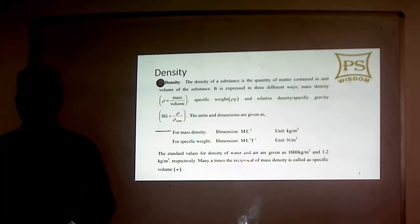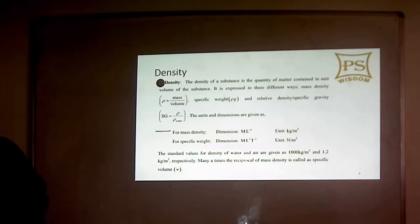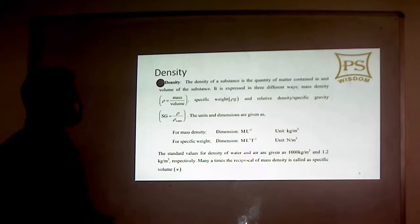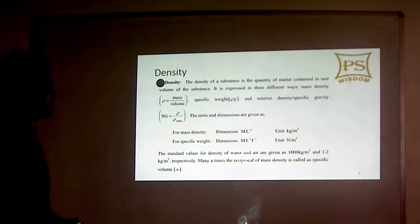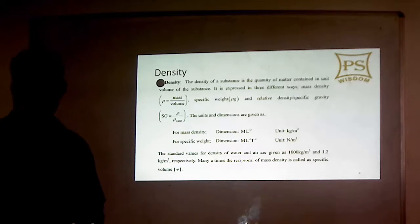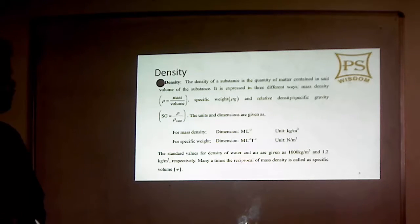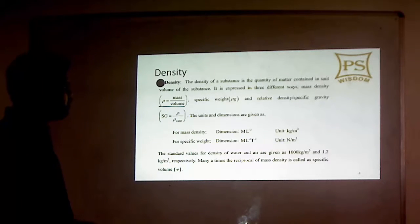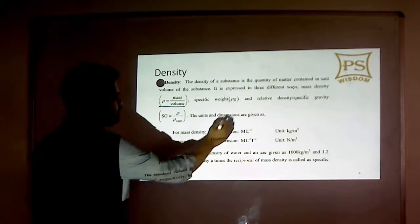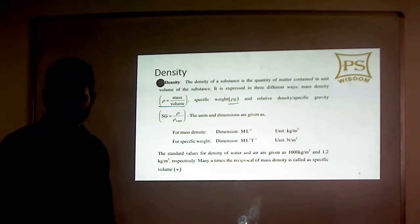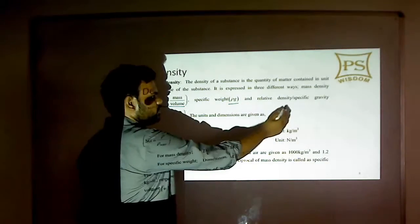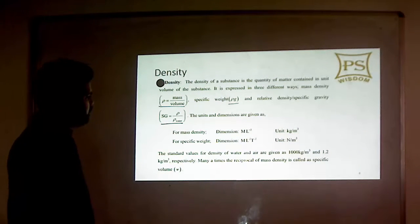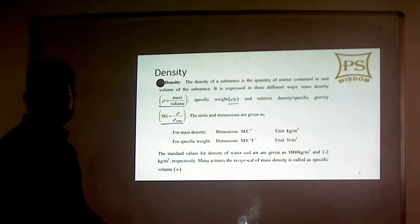The density of a substance is the quantity of matter contained in a unit volume of the substance. It is expressed in three different ways: mass density, which is mass upon volume; specific weight, which is rho times g; and relative density or specific gravity, which is the density of the substance upon the density of water.